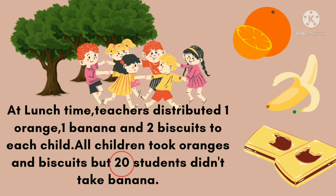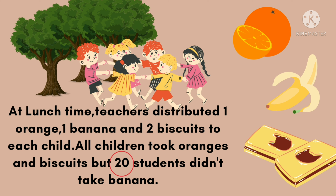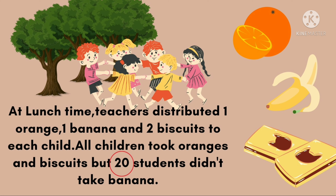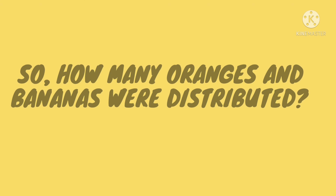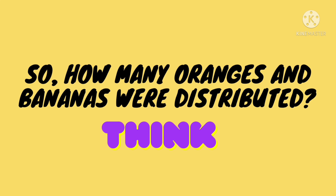After moving and enjoying, they all became tired and hungry. So teachers distributed one orange, one banana, and two biscuits to each child. All children took oranges and biscuits but 20 students didn't take banana. So how many oranges and bananas were distributed? Think!